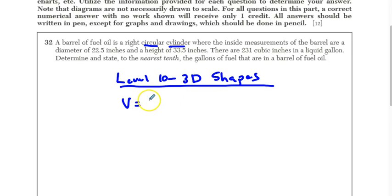So that is just a formula that's given in the Regents. It's pi r squared times h. Now, very kindly of them, they've given us that information. So the volume is going to be equal to pi times our radius, which is just going to be half of this, 11.25, right, because this is the diameter, we need the radius squared, times the height of 33.5.